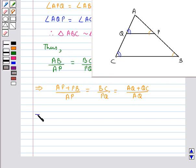Now on substituting the values for AP, PB and AQ we get 10.5 upon 3.5 equal to BC which we have to find out upon PQ which is of length 4.5.